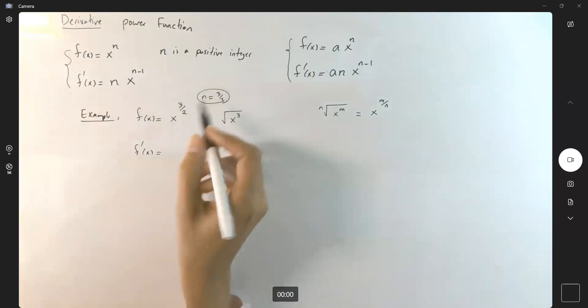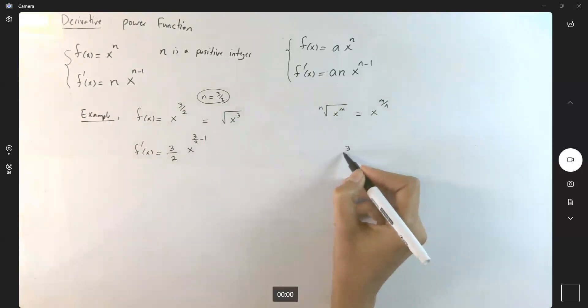f'(x) becomes—you take n and write it in front of x to power 3/2 minus 1. But 3/2 minus 1 is 3 minus 2 divided by 2, or a half.